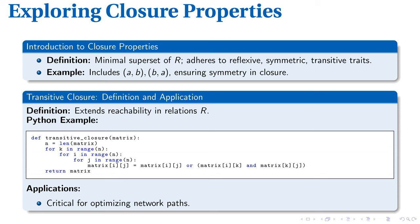As we delve further into closure properties, we encounter a specific type called transitive closure. This property extends the reachability of elements within a relation R. In practice, this can be modeled in Python using code like shown here. A Python function computes the transitive closure of a matrix, modifying it to ensure a path exists between i and j, if a path from i to k and k to j exists. This principle proves vital for enhancing the efficiency of network paths.